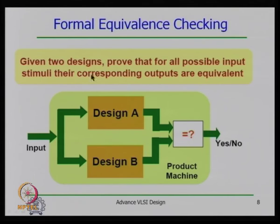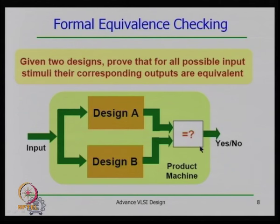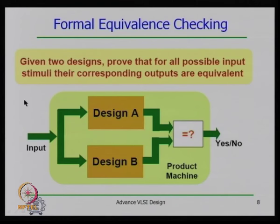For combinational equivalence checking, you have design A and design B. When you apply input to both, they are supposed to produce the same output. If they produce different outputs, the designs are not equivalent. We need to check whether for all possible inputs both designs produce the same output.